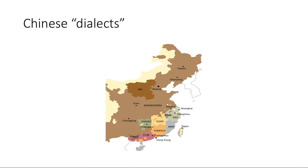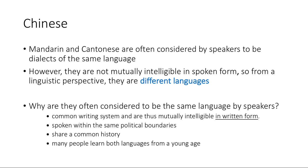One example is that many languages spoken in China are often referred to as different dialects. Specifically Mandarin and Cantonese, but also many other so-called dialects of Chinese like Wu, Min, etc., are considered by speakers to be dialects of the same language. However, these aren't mutually intelligible in spoken form. So from a linguistic perspective, they're actually different languages.